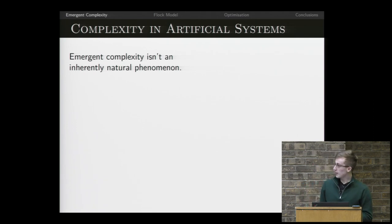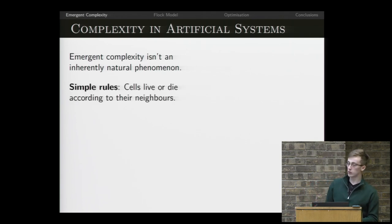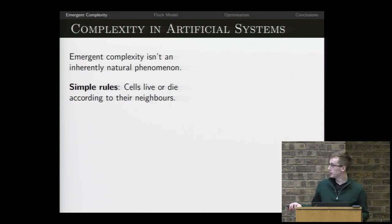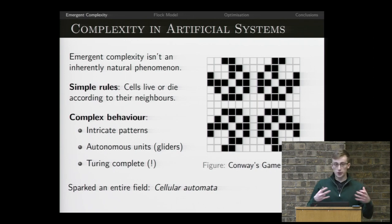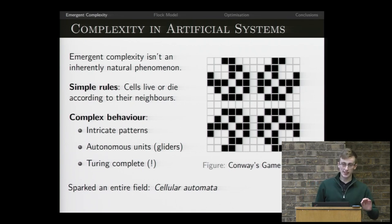We've talked about emergence, but there's nothing fundamentally natural about it — we can develop systems artificially that exhibit this complex behavior. A really classic example is Conway's Game of Life. We divide space into a discrete number of cells and can derive really complex behavior just with some simple rules that define evolution over time. In fact, this system is as expressive as any other system we could come up with because it's Turing complete.